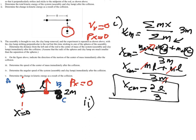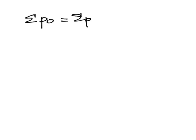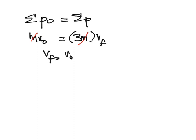In part three, they want us to find the speed of the center of mass immediately after the collision. We use conservation of momentum: ΣP₀ = ΣP. At the beginning we have MV₀ from the one moving object; at the end we have 3M·V_final. So the velocity of the center of mass is the same as what we solved in part a: V₀/3.